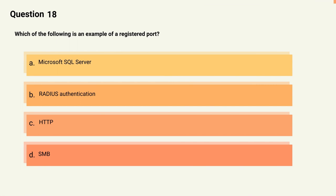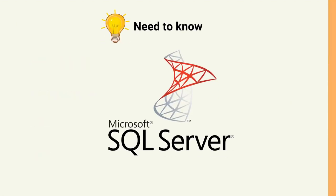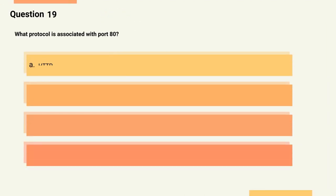Question 18: Which of the following is an example of a registered port? Options: A) Microsoft SQL Server, B) RADIUS authentication, C) HTTP, D) SMB. The correct answer is Option A, Microsoft SQL Server. Explanation: Examples of registered ports include Microsoft SQL Server (1433–1434) and RADIUS authentication (1812).